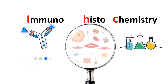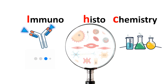As the name suggests: 'immuno' has something to do with antibodies, 'histo' means it has something to do with tissues and cells, and 'chemistry' indicates that an antigen-antibody reaction is somehow important for this technique.